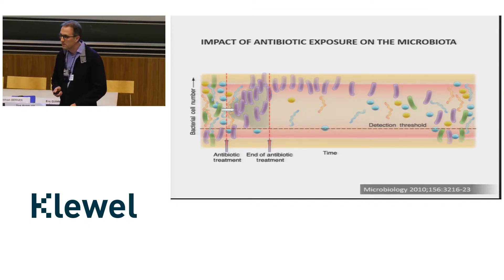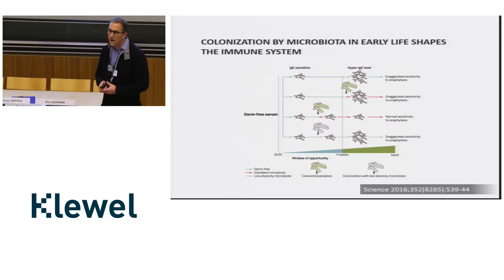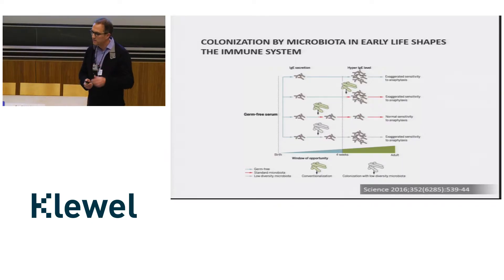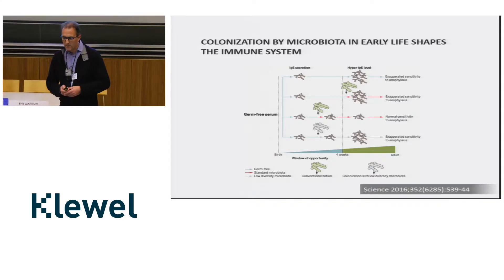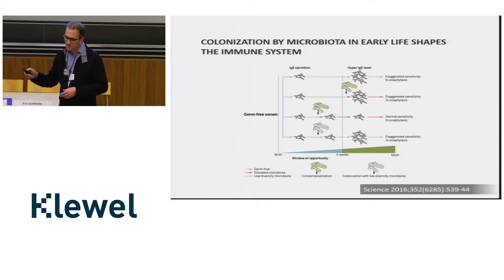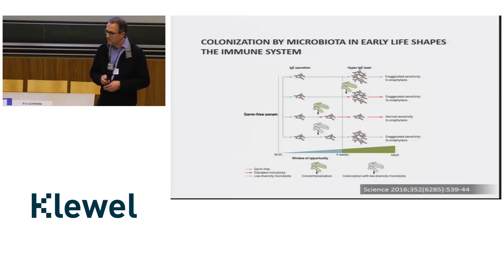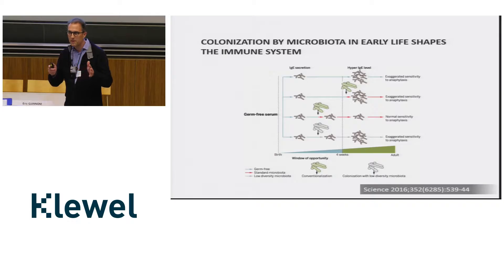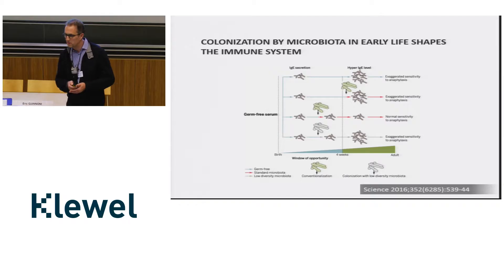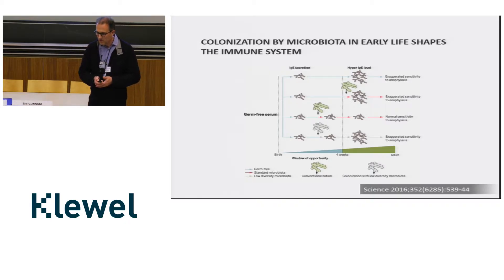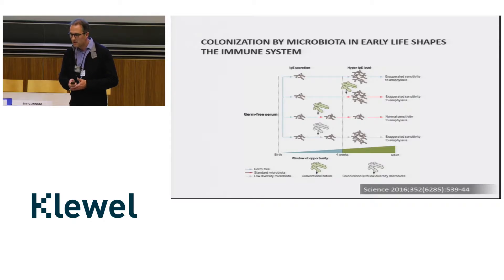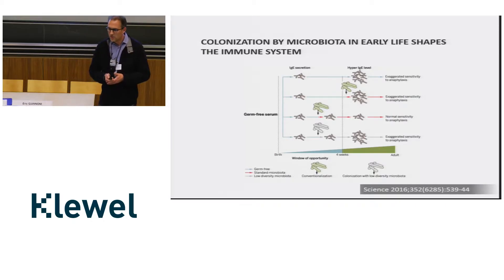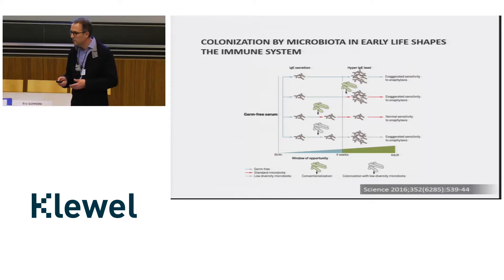Unfortunately, we are neonatologists, so we are treating our patients in a very vulnerable time. In a mouse model they looked at the colonization and there is an impact of colonization on the immune system. If you have no colonization, or if you have colonization very late — in mice that is four weeks, and we have no idea about this time window in humans — or if you have colonization with low diversity, these mice had high IgE levels and a trend to anaphylaxis.